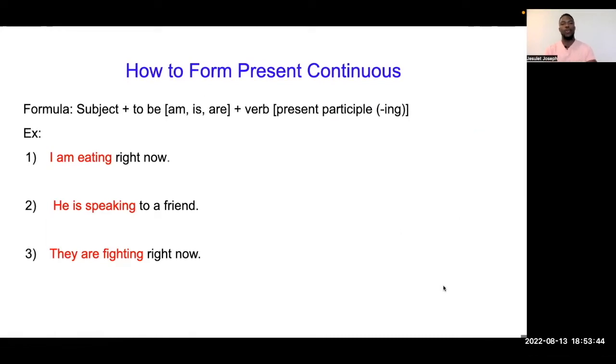How to form present continuous? Koman pou forme present continuous ou bien present progressive? Formile lan se subject plus to be. Se ke wap konjige veb to be ya. Se se I wap di N. Se se he wap di is. Se se you, ou bien we, ou bien they, wap di are. So, subject plus to be plus the verb, the present participle of the verb.